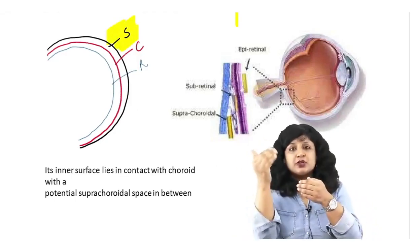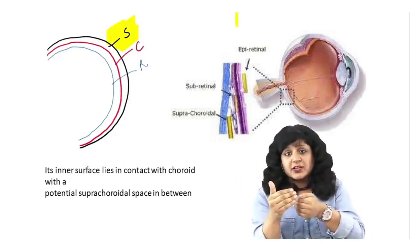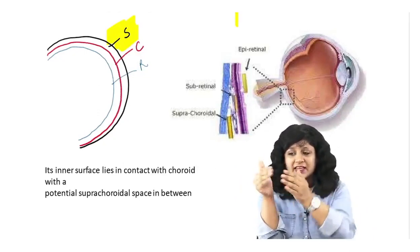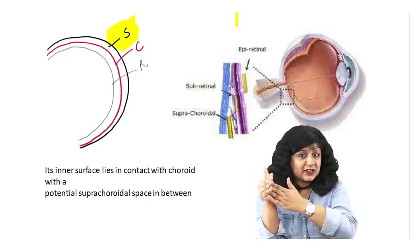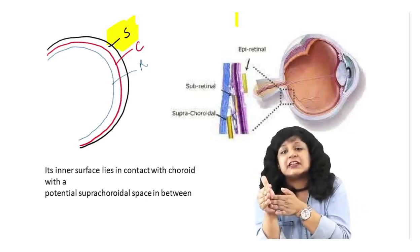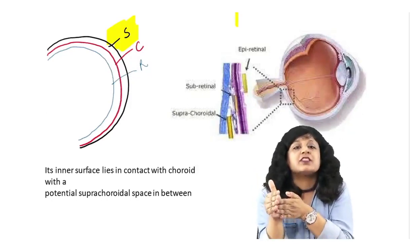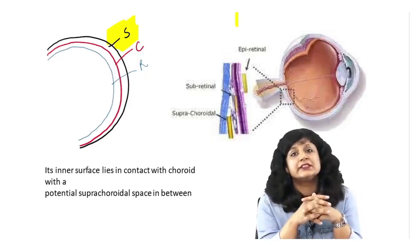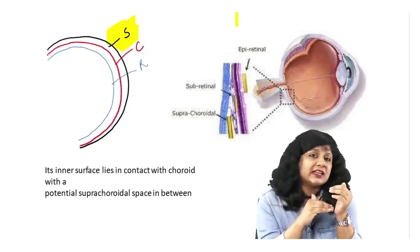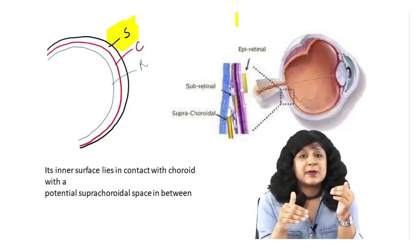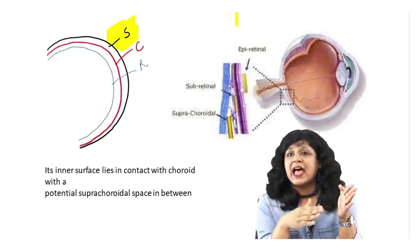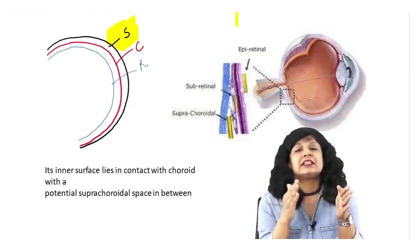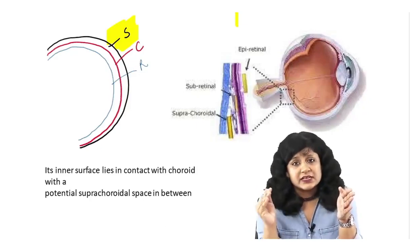Sclera is external to the choroid. This is the outer surface of the sclera and this is the inner surface of the sclera. Obviously, the inner surface of the sclera is in contact with the choroid, and there is a space between them called the suprachoroidal space. Like you study the subretinal space — which lies between the RPE layer and the neurosensory retina — similarly, we have a space between the choroid and the sclera, called the suprachoroidal space.